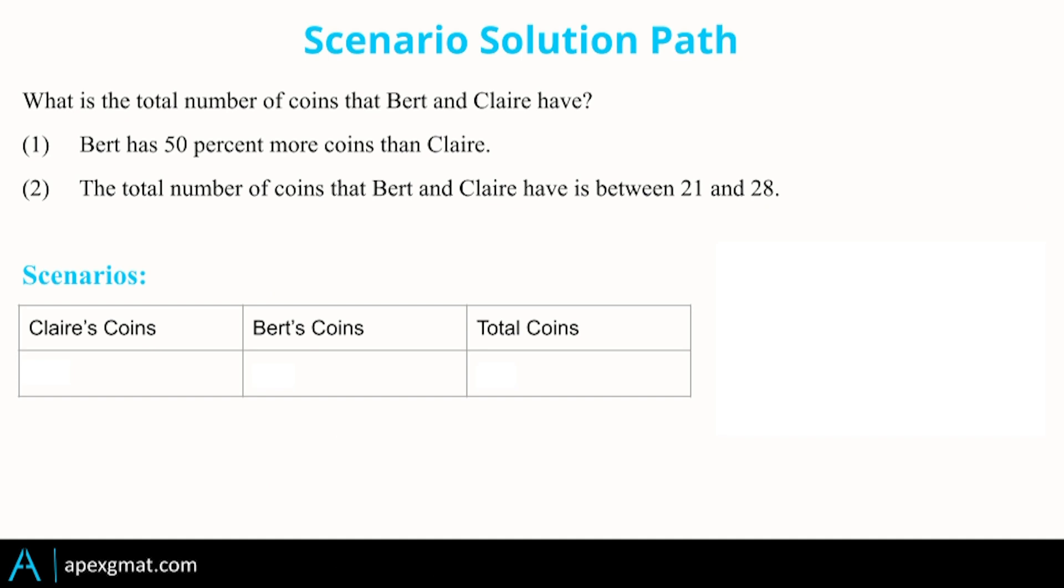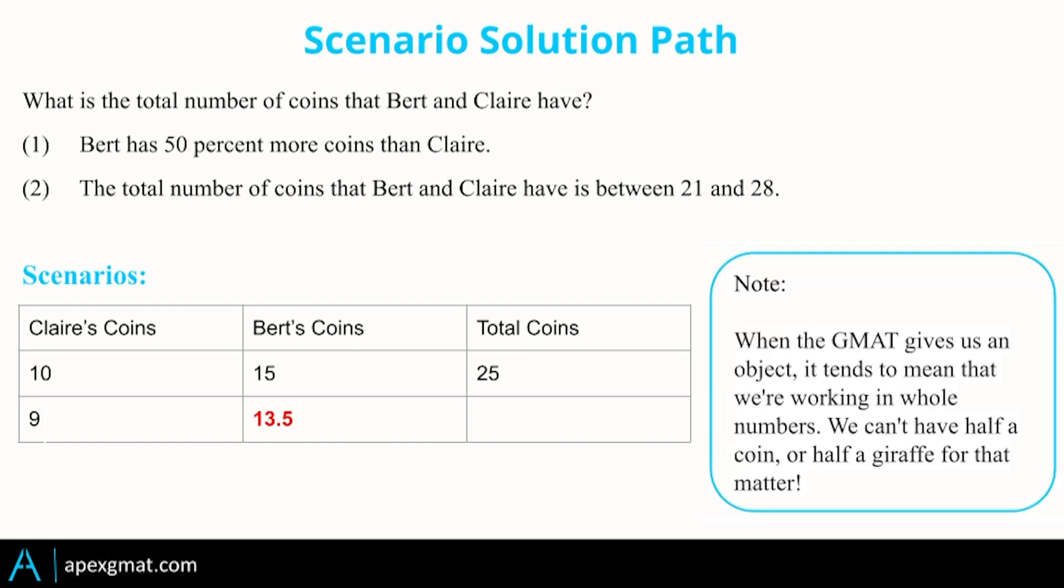So now we can run some scenarios. If Claire has 10 coins and Bert has 15 that brings us to 25. But we have these other numbers in the range. So our question is can we run other scenarios to make another amount of coins within that range valid or is 25 the only one available? If Claire has nine coins then Bert is going to have a fraction of a coin because 50% more means that nine plus four and a half is 13 and a half. But we're not allowed to have part of a coin. So notice when the GMAT uses whole numbers a lot of times they'll use people or animals or coins. Something that can't be divided, that can't be fractional or decimal.